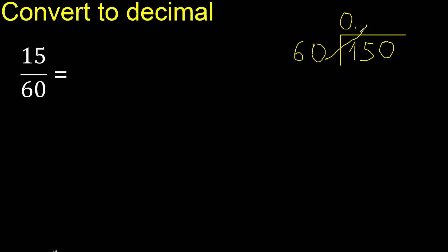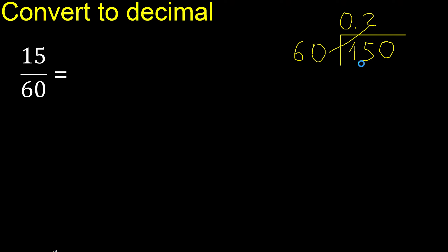Multiply by which number is nearest to 150, but not greater. Multiply by 3 is greater; multiply by 2 is 120. Subtract is 30. There is no number that goes down, therefore complete — always complete with 0.